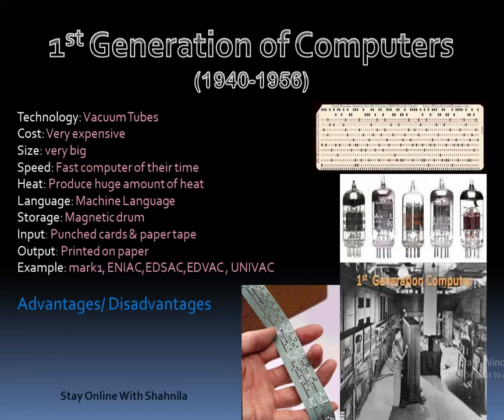The advantage of first generation computers was that they were the fastest computers of their time. However, their disadvantages included very large size, difficulty of use because only experts could write programs in machine language, very difficult maintenance due to frequently failing vacuum tubes, and high heat production with high electricity consumption.